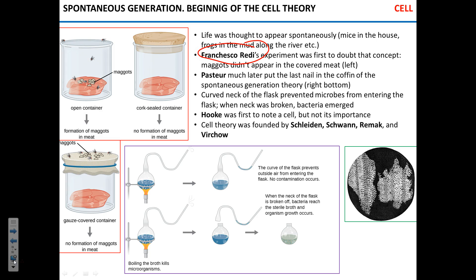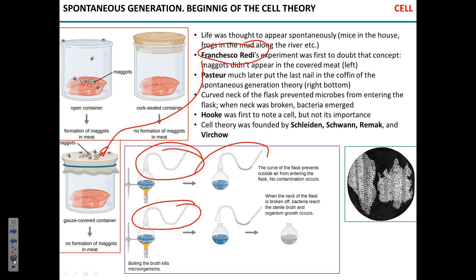Francesco Redi was the first person who demonstrated that in a piece of meat, maggots do not arise by themselves. If there are no flies that sit there, no maggots. It was the first blow. Later it was Pasteur with his famous experiment with the U-shaped neck flask. When the neck remained intact — that flask can still be seen in the Pasteur museum in Paris — but when the neck was broken, contamination from the air produced bacterial growth. It was quite a convincing experiment in terms of dismantling the spontaneous generation theory.